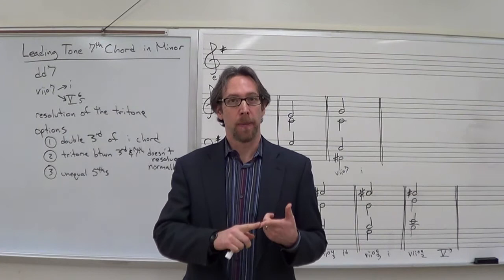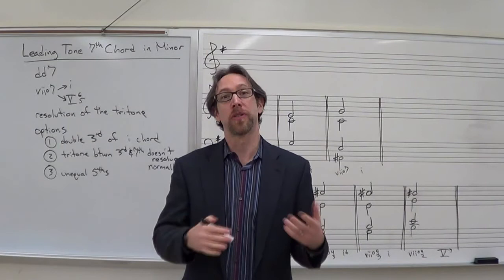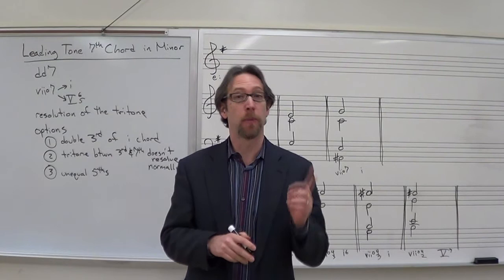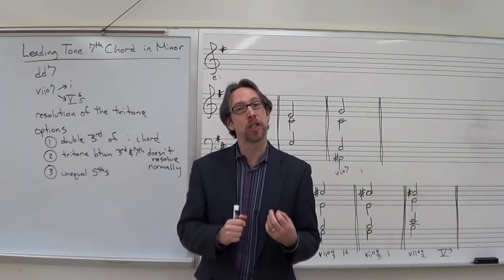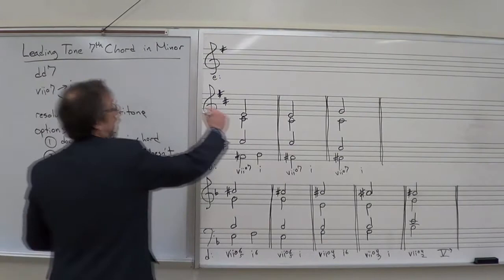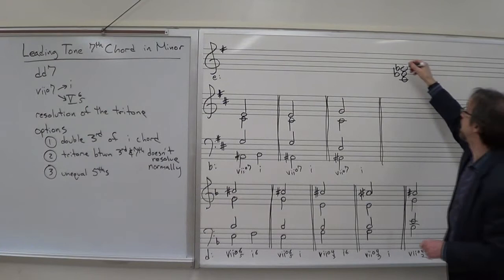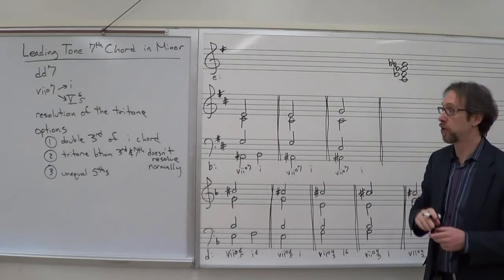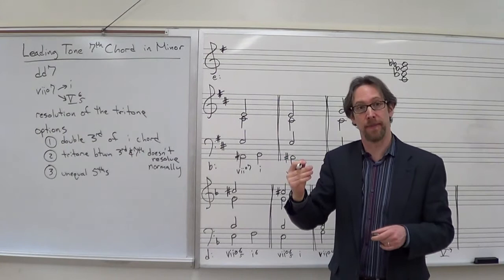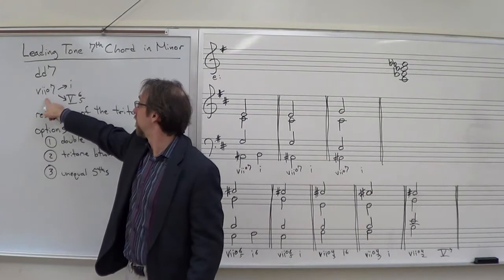We're going to talk about the leading tone seventh chord in a minor key. It has many of the same rules and function as in major, but there are a few differences. Number one is the sonority: in a minor key the sonority is a diminished diminished seventh, meaning a diminished triad with a diminished seventh. For example, with C as the root, a diminished triad would be C, E-flat, G-flat, and the diminished seventh would be B-double-flat. This is different from major, which uses a diminished triad with a minor seventh.